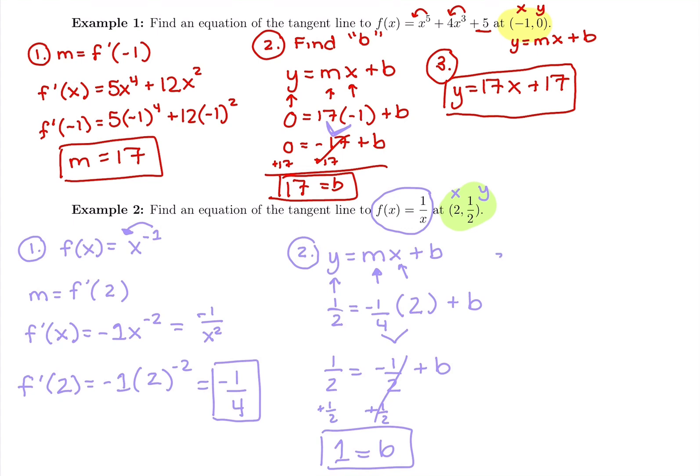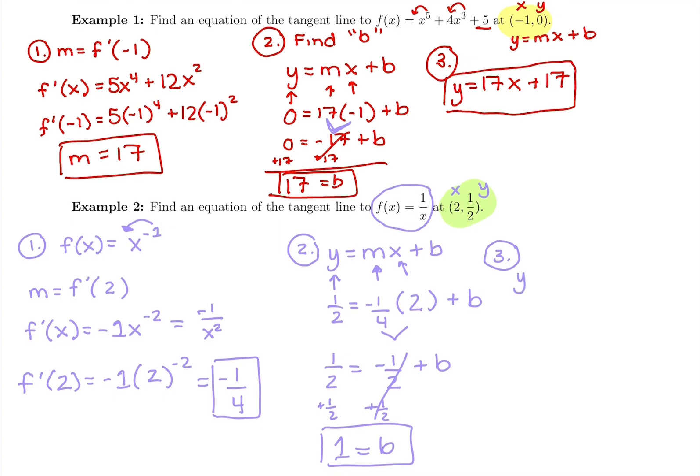And my last step is not really a step, but we are asked for the equation of a tangent line. So our final answer should be the equation of a tangent line. So we have y equals m, which is negative 1 fourth, x plus b, negative 1 fourth x plus 1 for this one.